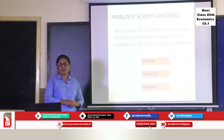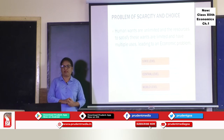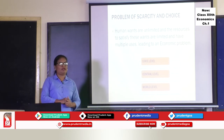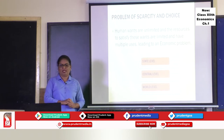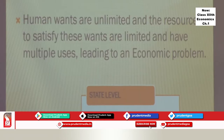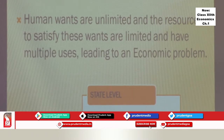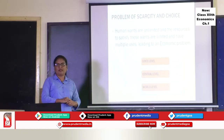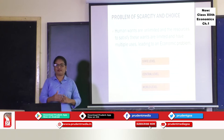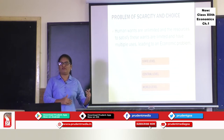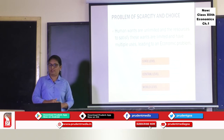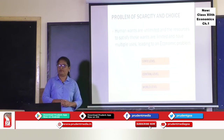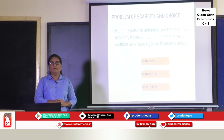Now we have the problem of scarcity and choice. This concept is very important in order to satisfy our unlimited needs with our limited resources. Human wants are unlimited and unending. We human beings are never satisfied with what we have. If one need is satisfied, another need arises. We need more and more of different goods. So we say human wants are unlimited, but resources — which could be the factors of production, money, raw materials — are limited, and the resources have multiple uses.